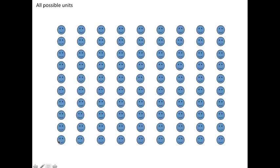What I'd like to show you here is a graphical representation of this idea of a target population and an estimand. The smiley faces I have here represent all possible units of analysis. What is a unit of analysis? In most studies that you'll probably see, the unit of analysis is a person. So we're interested in the heights of all women, or we're interested in the votes of all voters in Massachusetts.